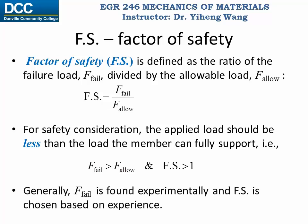Generally, the failure load is determined through experiments, and the factor of safety is chosen based on experience depending on the actual application. For example, if you plan to build a tool shack versus a tree house for young children, you would want to choose a higher factor of safety — a more conservative, safer plan for the tree house project. But you don't want to choose an excessively high factor of safety either, because you also need to manage your budget and avoid unnecessary waste in resources and money.